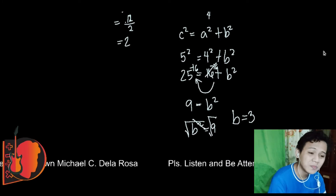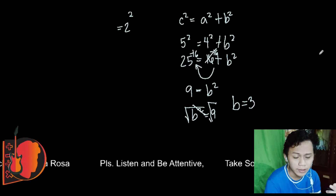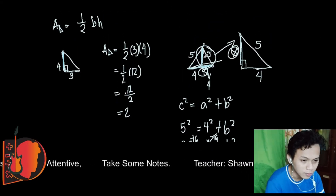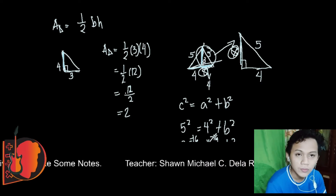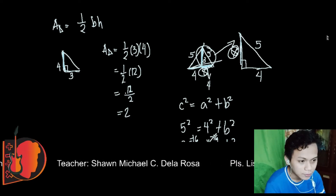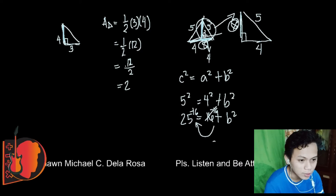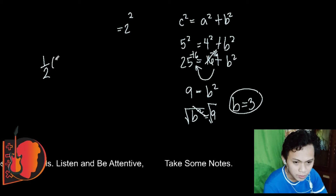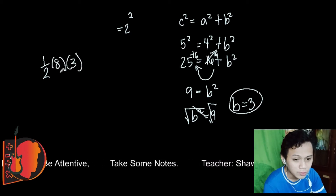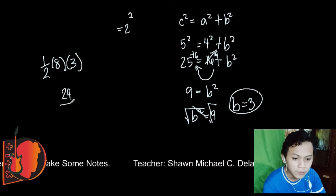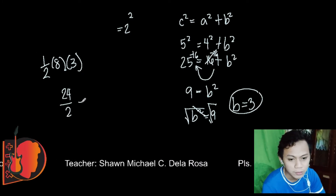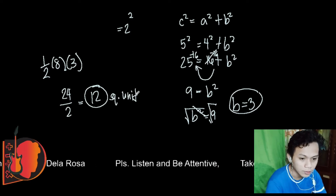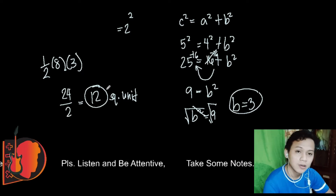We haven't gotten the area of the triangle yet. We now have the height, which is 3. So the area equals one half times base times height: one half times 8 times 3. Eight times 3 is 24, and 24 divided by 2 equals 12. The area is 12 square units — whether that's square centimeters, square inches, or whatever unit is given.